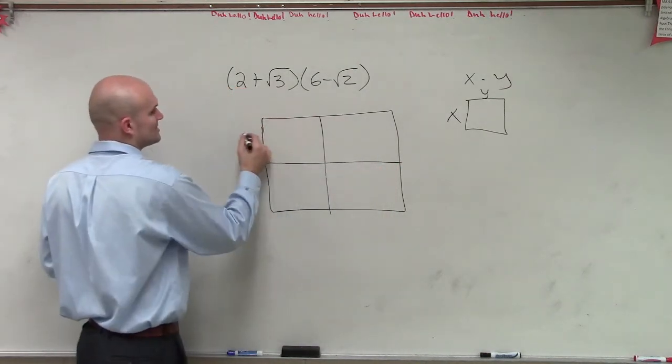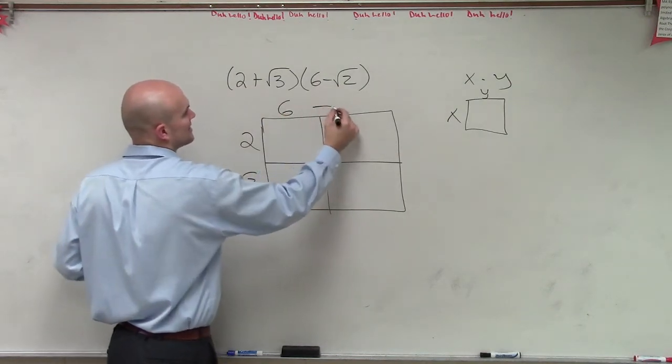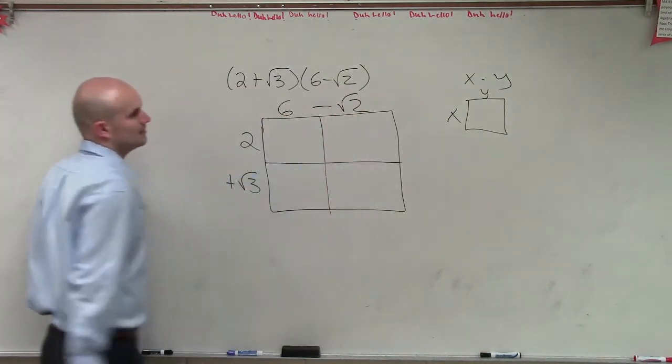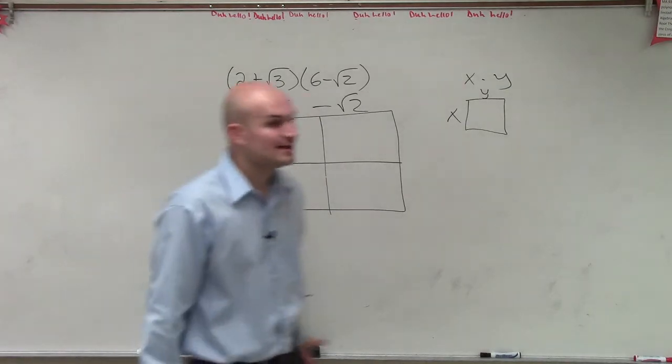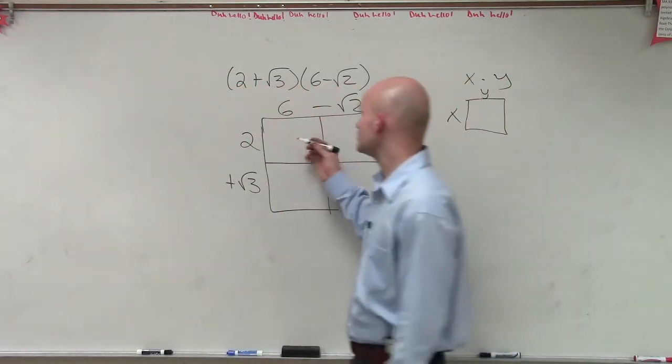So I'll do one side. I'll do 2 plus the square root of 3. Here I do 6 minus the square root of 2. So when applying this method, the best thing I like to do is just multiply for each box. 6 times 2 we know is 12.